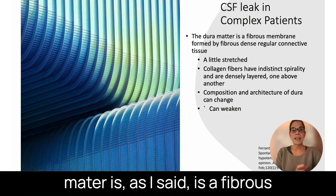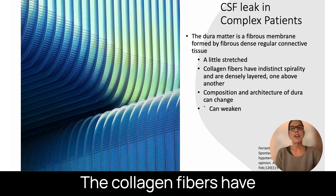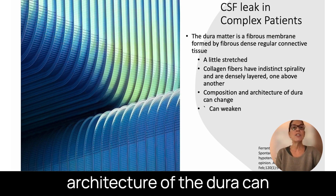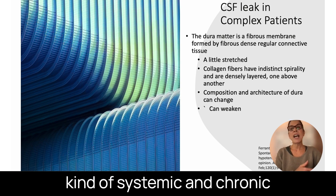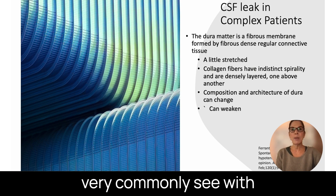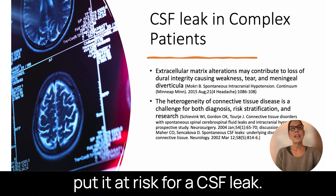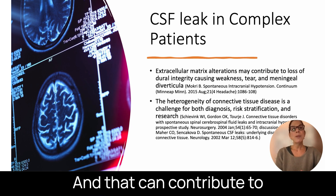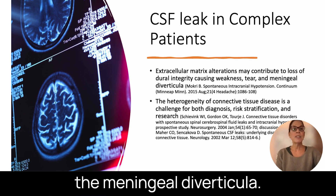The dura mater is a fibrous membrane formed by dense regular connective tissue. The collagen fibers have an indistinct spirality that are densely layered one above another. The composition and architecture of the dura can change in a patient with connective tissue disorder, and also with any kind of systemic chronic inflammatory or immune response — as we very commonly see in complex patients. This can weaken the dura and put it at risk for a CSF leak, weaken the extracellular matrix, increase risk of a leak by causing weakness, tears, and meningeal diverticula.